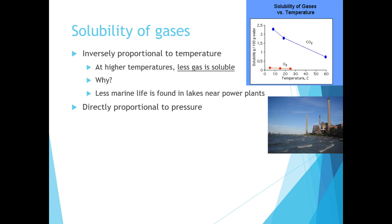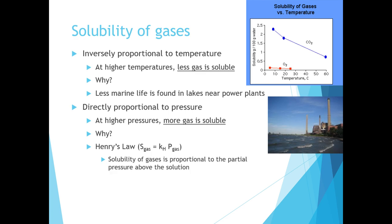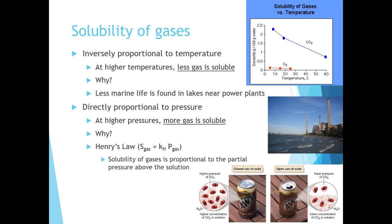The solubility of gas is directly proportional to the pressure on the surface of the solution. At higher pressure, more gas is soluble because we can force more gas molecules to leave their gaseous state and enter into the solution. This can be described mathematically with Henry's law, where the solubility of a gas equals a constant times the pressure exerted on the solution. A great example is carbonated soda — in a closed can, there is high pressure on the surface of the soda, so a lot of carbon dioxide gas is dissolved. When you open the can, going from high pressure to atmospheric pressure, the solubility of the gas decreases and gas bubbles leave the solution.